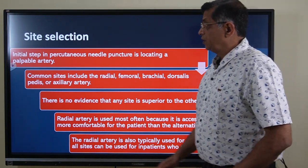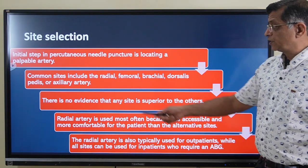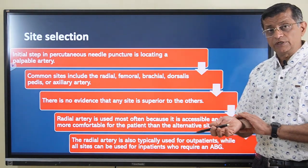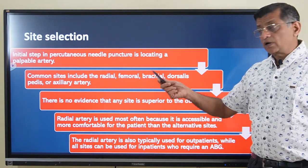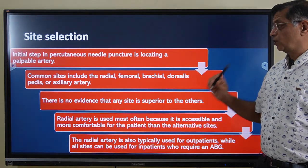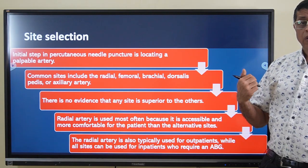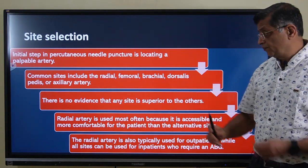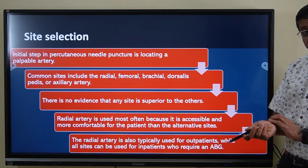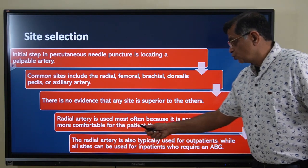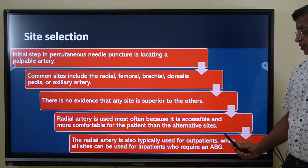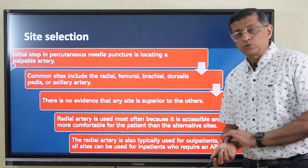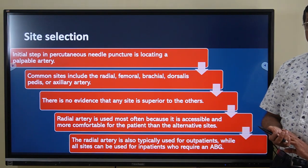The initial step in percutaneous needle puncture is locating a palpable artery. Common sites include radial, femoral, brachial, dorsal pedis, and axillary. There is no evidence any site is superior to others. The preferred site is the radial artery because it is the most superficial. Brachial or axillary arteries are not recommended for non-experts due to risk of vasospasm or thrombosis. For outpatients, radial is preferred as it does not require prolonged compression; for inpatients, radial or femoral are most commonly used.